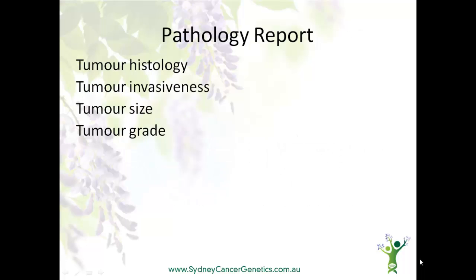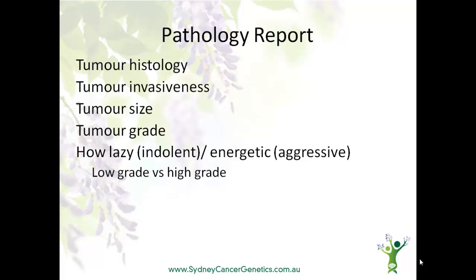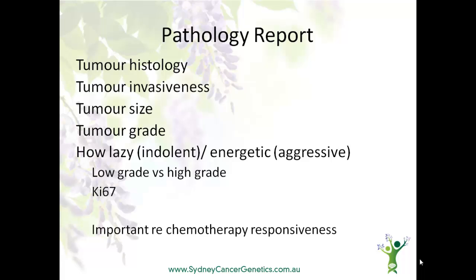So, we've discussed the histology and the invasiveness, and size is pretty obvious. Let's move on to grade. Tumour grade is really a way of describing how lazy or energetic a cancer is. The medical terms are indolent or aggressive, and pathologists have a scoring system — or several scoring systems — that are used to rank a tumour into low, intermediate, or high grade. Sometimes you may hear a low grade tumour described as well-differentiated, that is, similar to normal breast cells, while a high grade tumour may be described as poorly differentiated — a chaotic mess that has little resemblance to a breast cell. Ki-67 is another way of measuring aggressiveness, and you may see this on your pathology report. Chemotherapy and radiotherapy tend to work best in cells that are dividing more often, and some tumours are so lazy that chemotherapy is not needed.